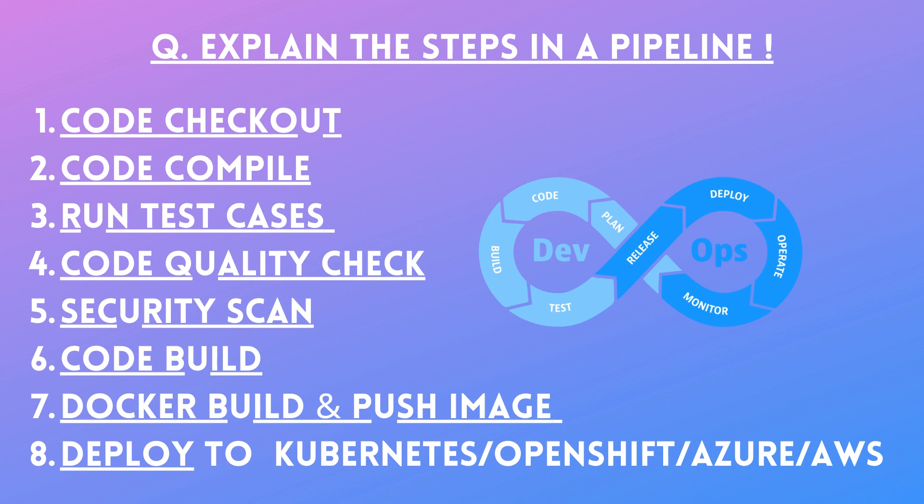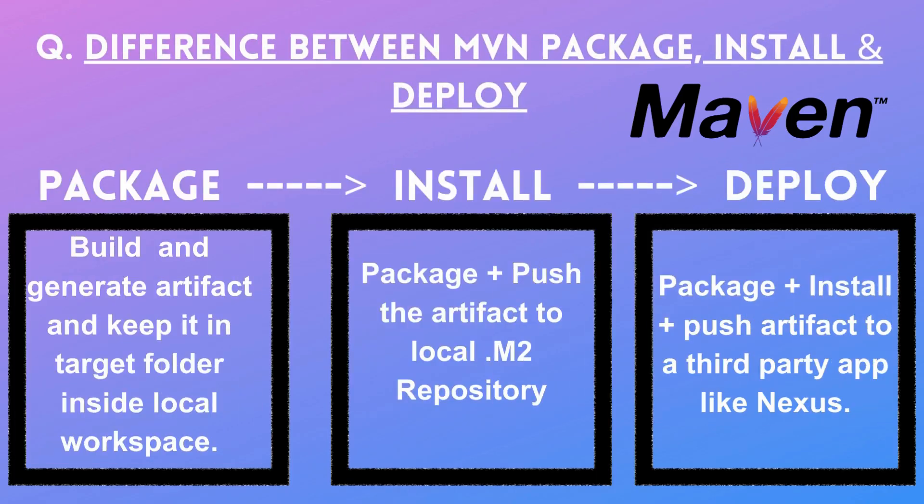The final stage is to deploy the application to a deployment cluster. The most common cluster is Kubernetes, which is available for free. We also have OpenShift from Red Hat, which is a paid version. Inside Azure we have AKS cluster and Web Apps, and we have AWS as well. In this way you can explain the steps of a pipeline to an interviewer.